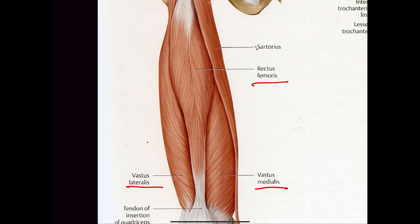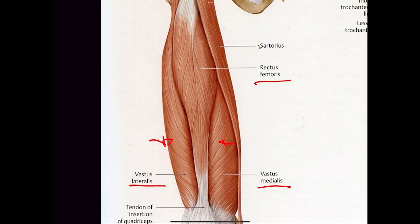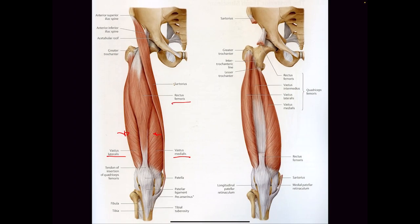These muscles are almost identical. The only difference is you can actually see the silhouette shape on the outside of the vastus. This is why you have that really dominant curve on the outside of your leg. On the inside, the curve is a little bit different.